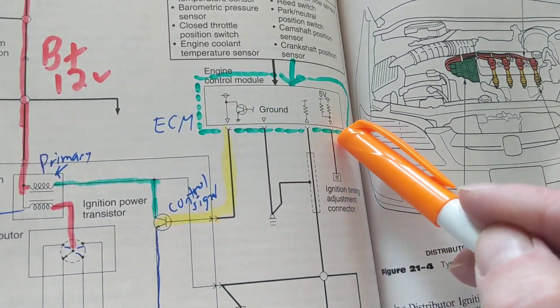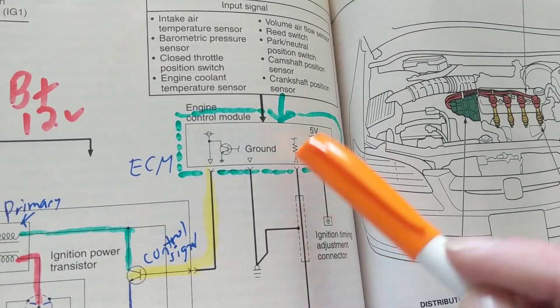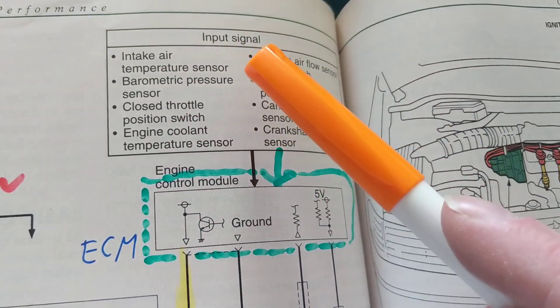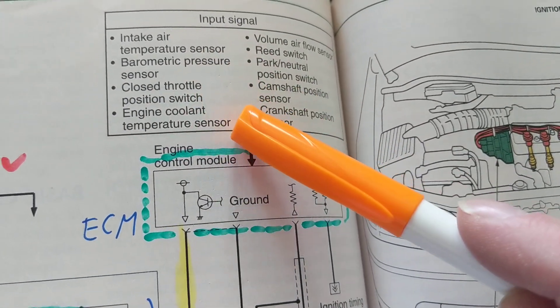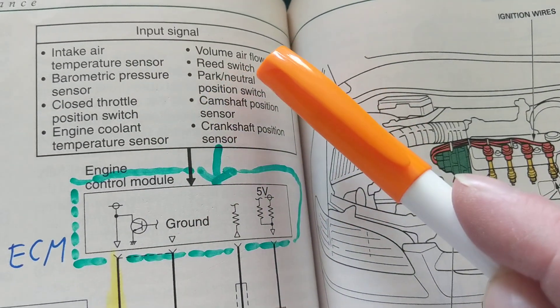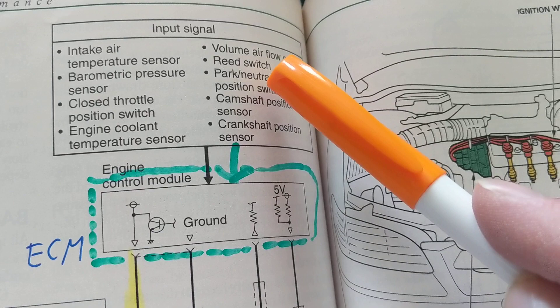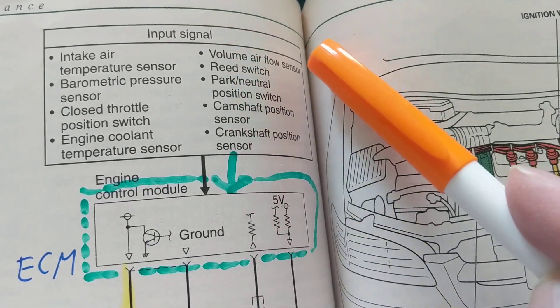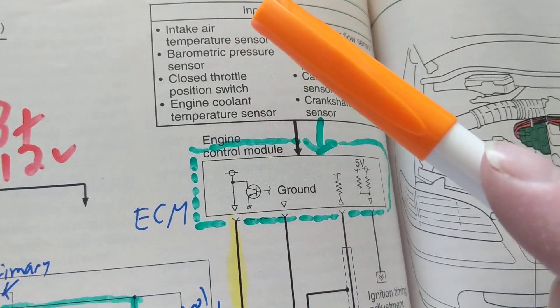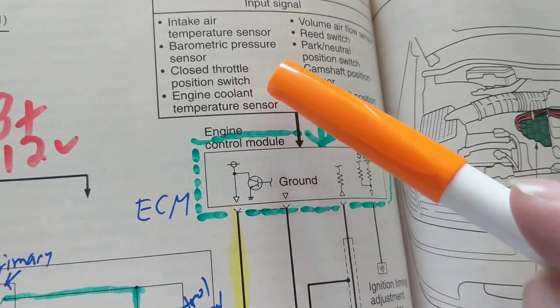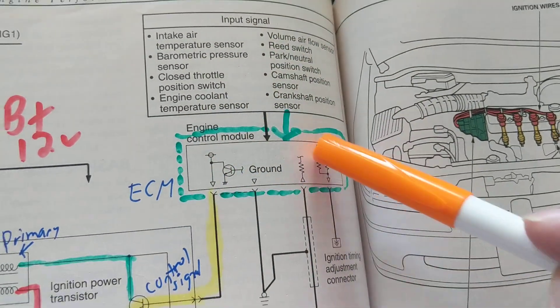This PCM is now taking over all the input signals from the intake air temperature sensor that we discussed, engine cooling temperature sensor, whether you're in park or neutral, volume airflow sensor, the temperature of the air, atmospheric pressure—all these things are taken into consideration in this computer, the ECM or the PCM.